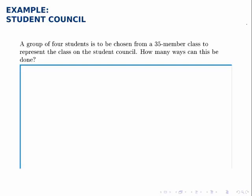Since there's no mention of order, no mention of position within this committee, we're just selecting four students and want to know how many ways we can select them. This is a combinations problem.